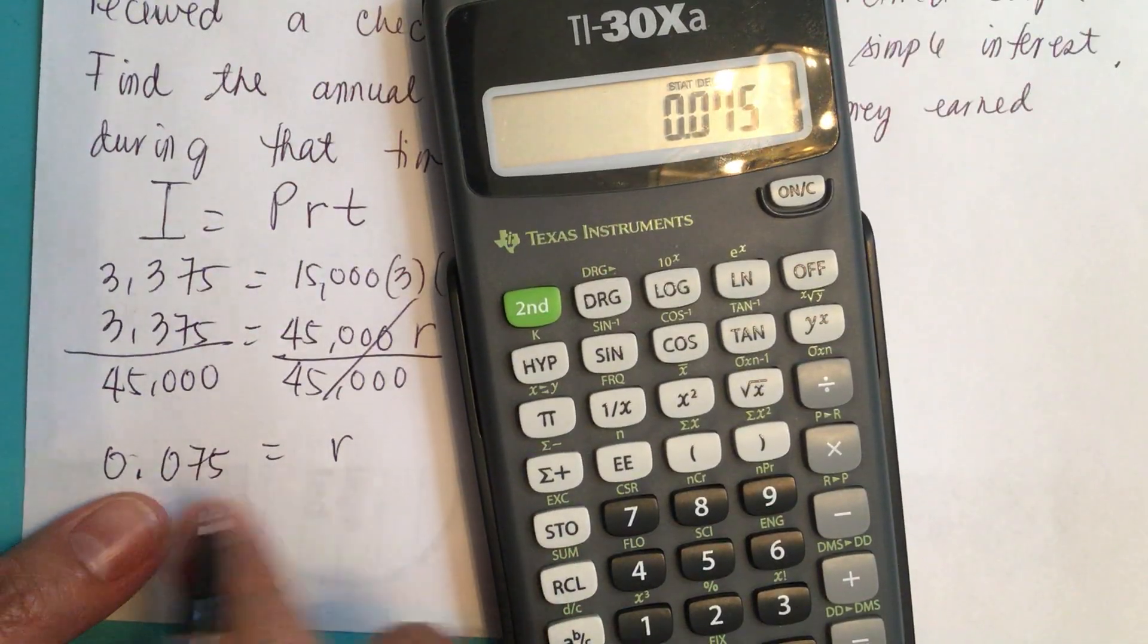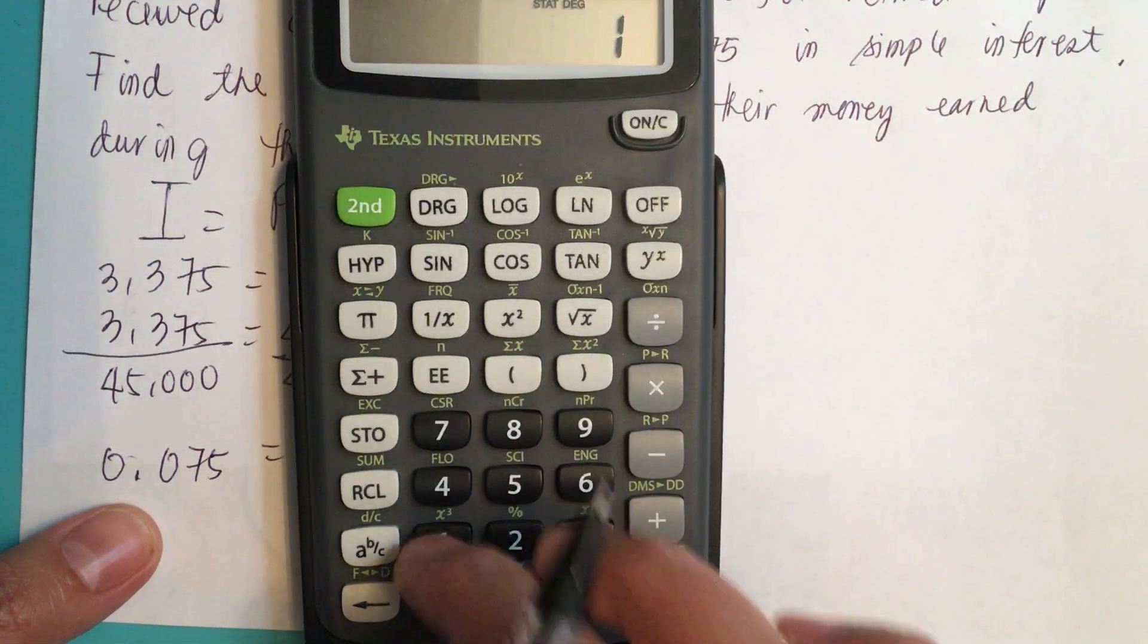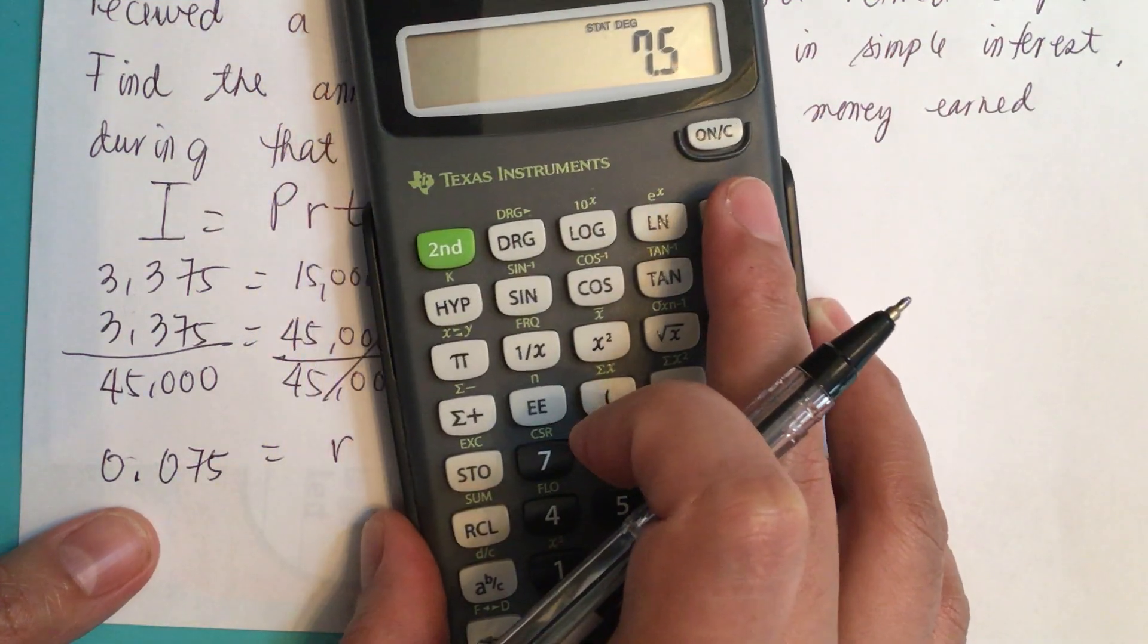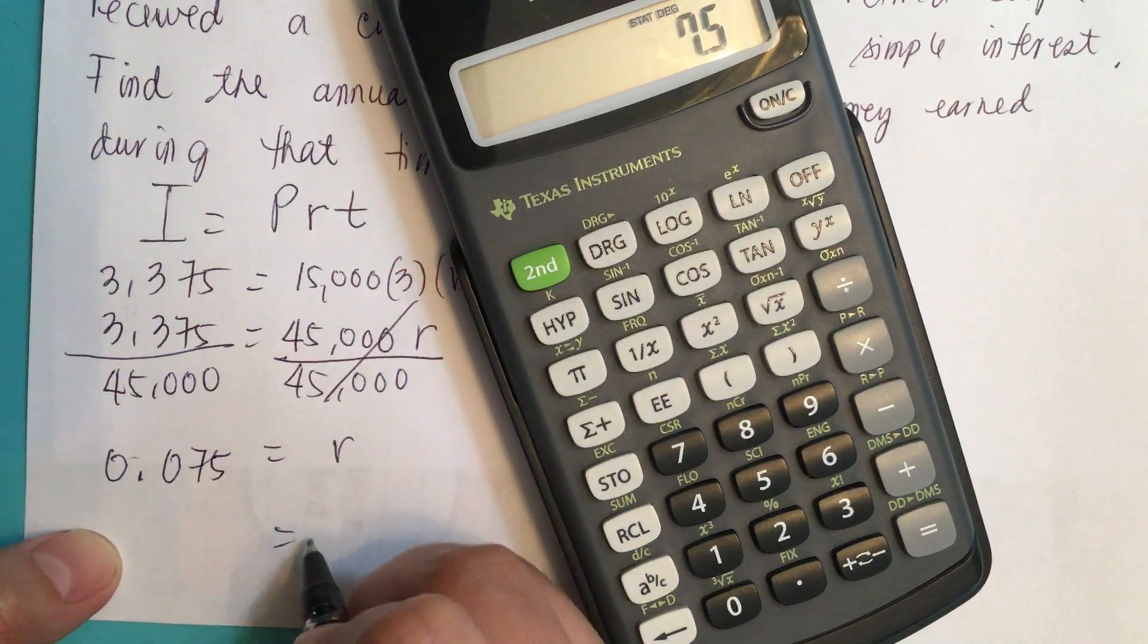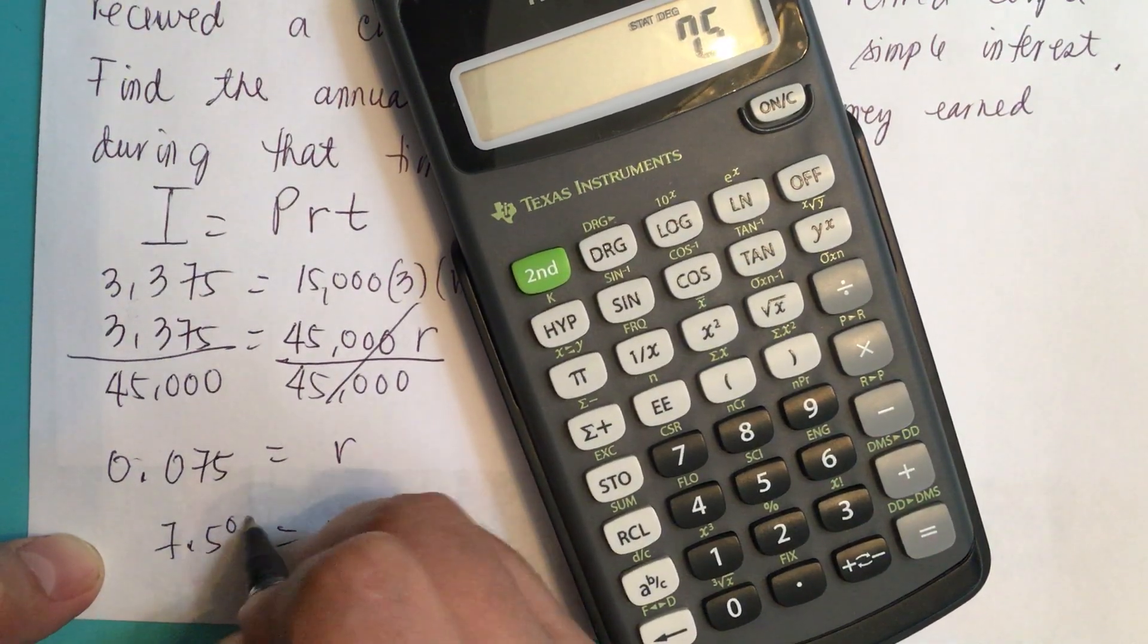We usually give it in percent, so we multiply this by 100. So it's 7.5. R is equal to 7.5%.